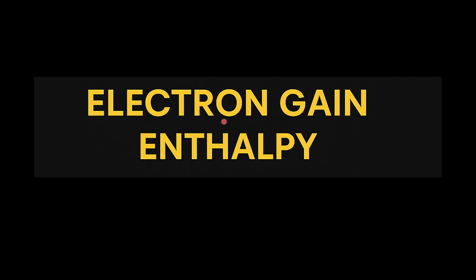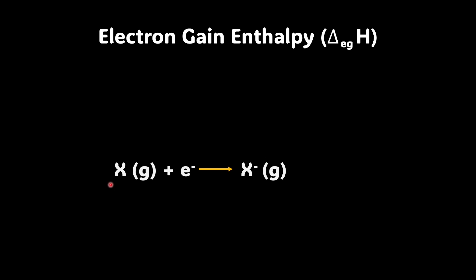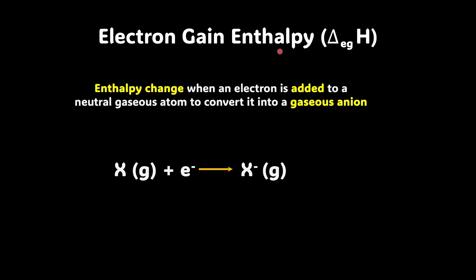In this video we will learn about electron gain enthalpy. To understand, let's consider a neutral gaseous atom X accepting an electron to become X minus anion. In this process of becoming a gaseous anion, either the energy is released or the energy is absorbed. So there is some sort of energy change that we are defining as electron gain enthalpy — the enthalpy change when an electron is added to a neutral gaseous atom to convert it into a gaseous anion.